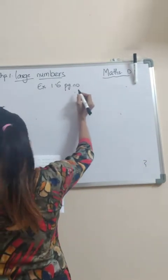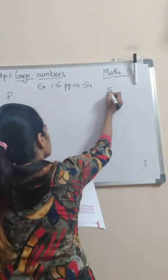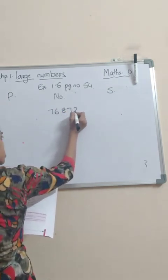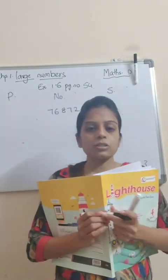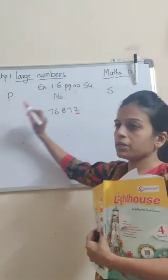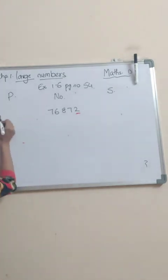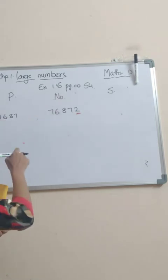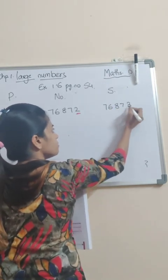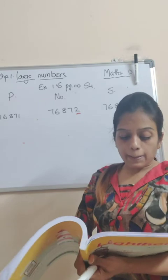We are doing bit number B of Exercise 1.6 on page number 54. See bit number B, first one: here you will write the predecessor, here you will write the successor, and the number here is 76872. When you are writing the successor and the predecessor, you will see the number on the ones place. What is the ones place? The number on the ones place is 2. So 7, 6, 8, 7 remain the same. What will the predecessor be — before the 2? One. And what will the successor be — after the 2? Three. This is nothing but successor and predecessor — you have to only change the ones place.